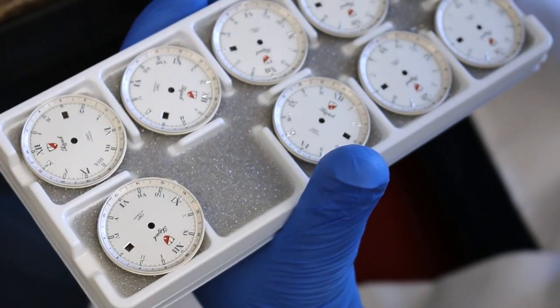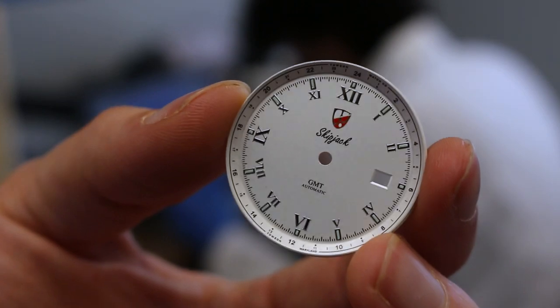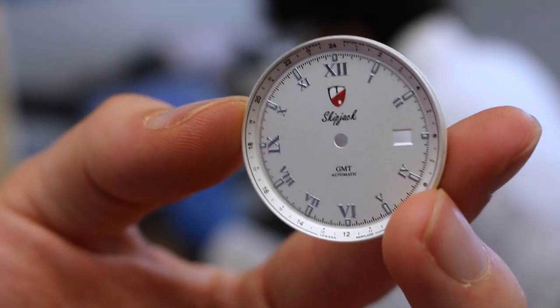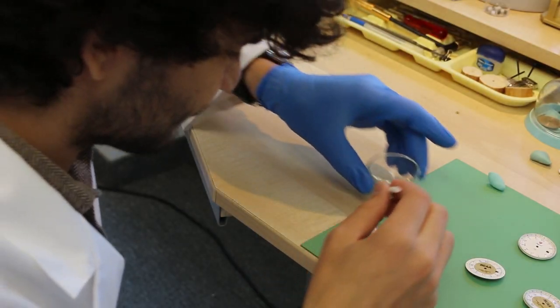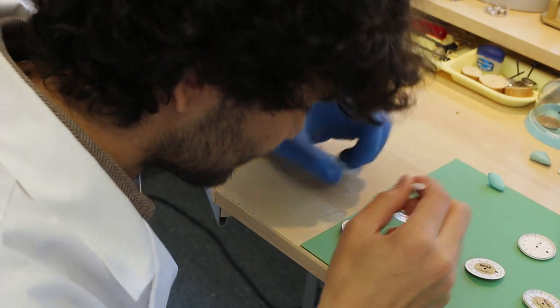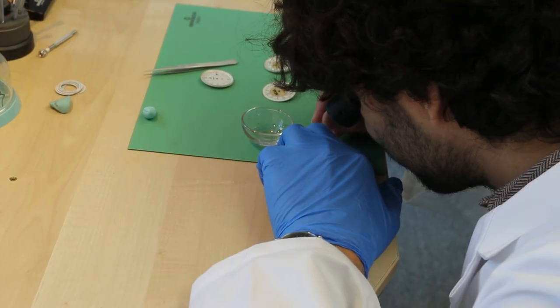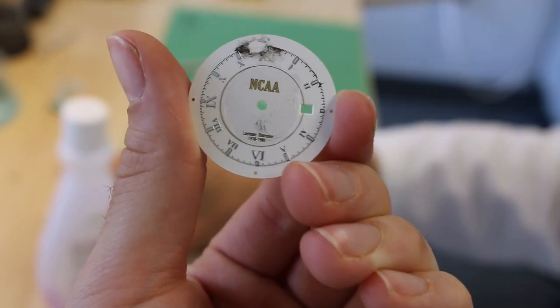Next is the fun part. Retrofitting a custom design on a watch face is no easy task. The first hurdle was taking off the original design. At first, we tried acetone, which took off the paint fine, but didn't leave the quality finish we were looking for.